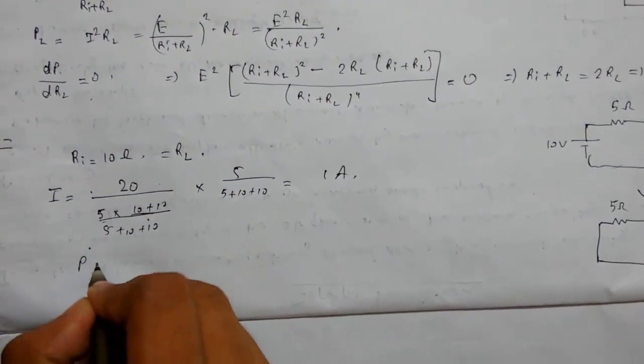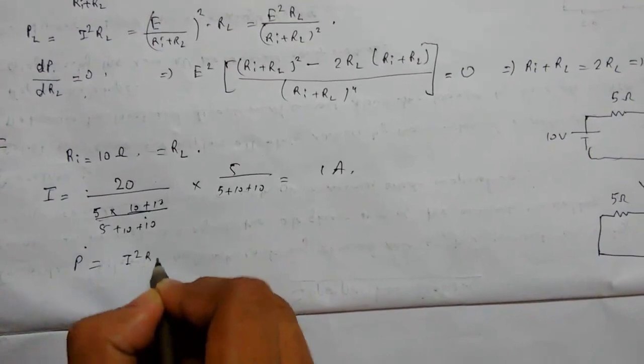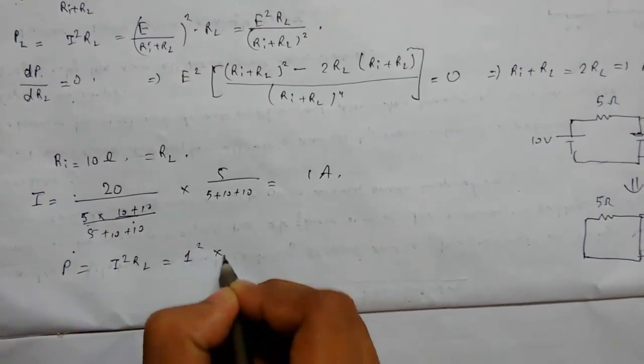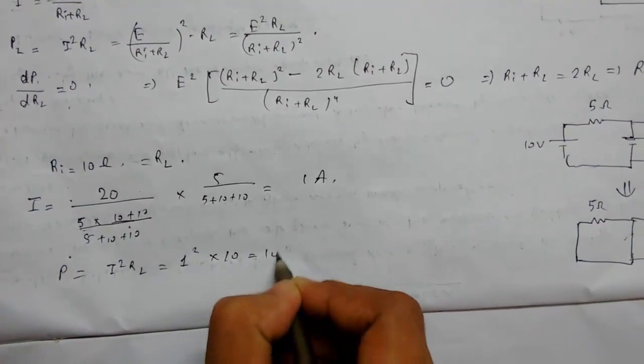So maximum power will be I²RL = 1² × 10 = 10 watts.